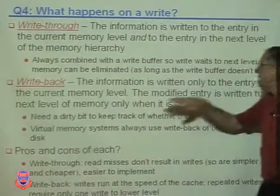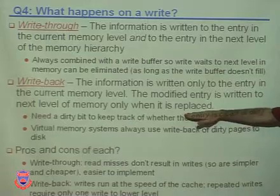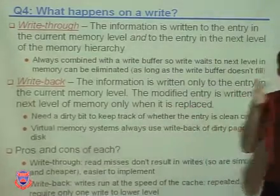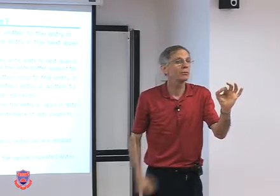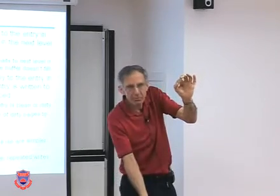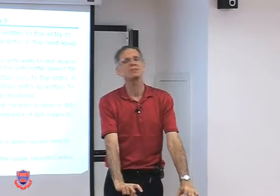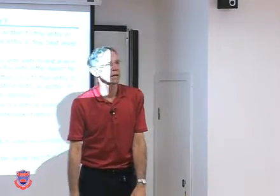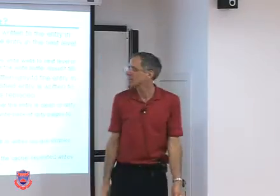With write back, the modified entry is written to the next level only when it's replaced. You need a dirty bit for every cache block to indicate whether it's been changed. If dirty, you must write it back on eviction. If clean — only reads occurred — no write-back is needed since it's still in sync with the level below. Virtual memory systems always use write-back of dirty pages to disk, because writing to disk is so slow we only want to do it when absolutely necessary — when a page is being evicted.